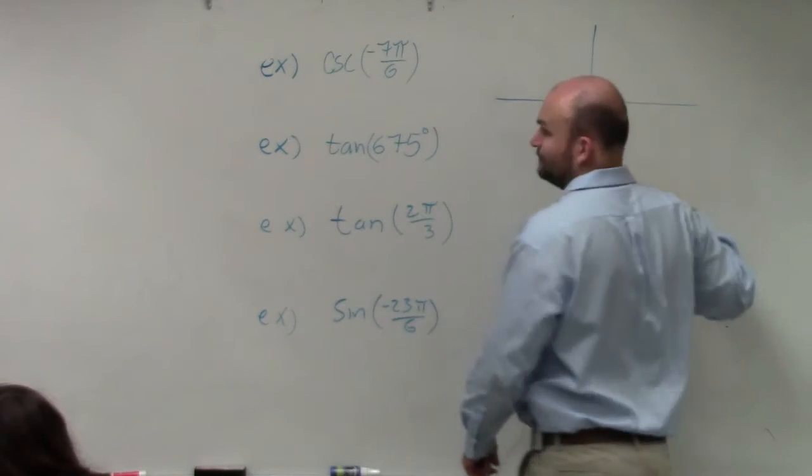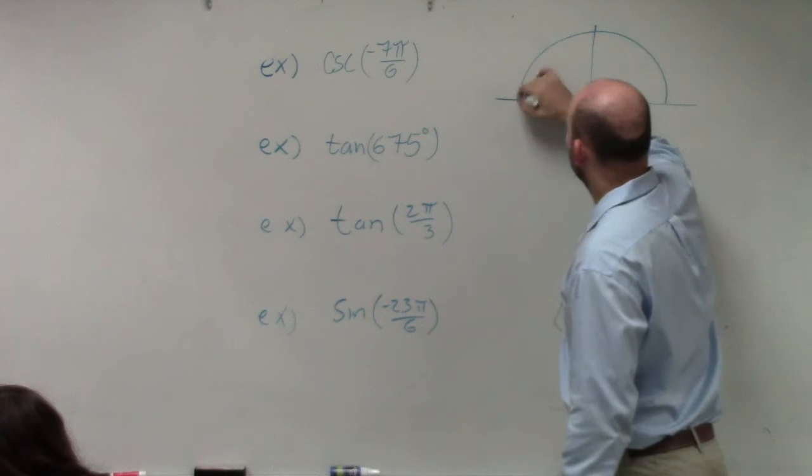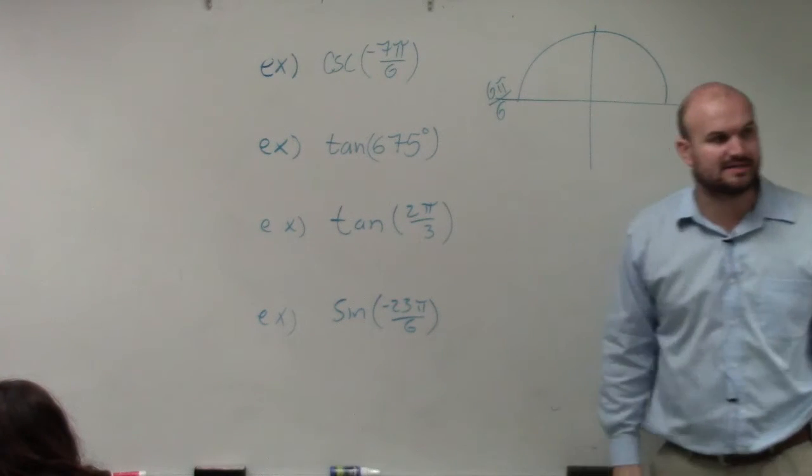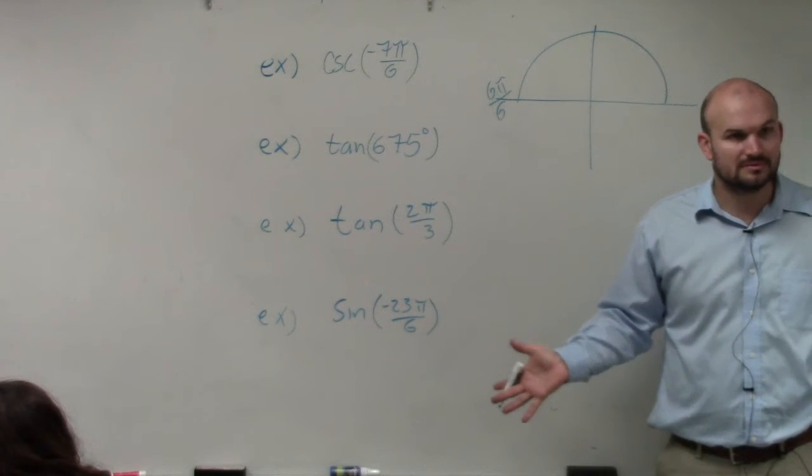But when you don't have a unit circle, you know that this is halfway around the circle, 6π over 6, right? OK.